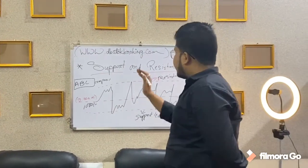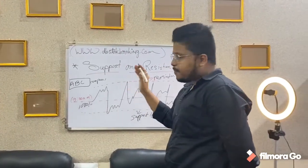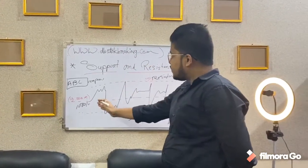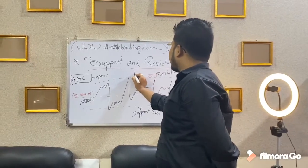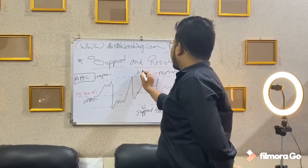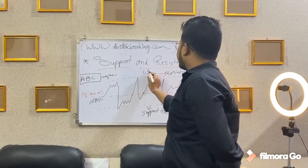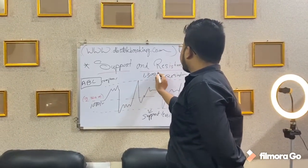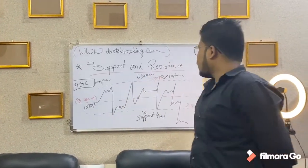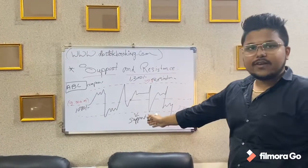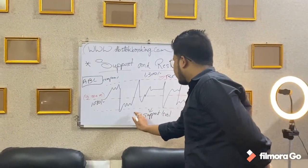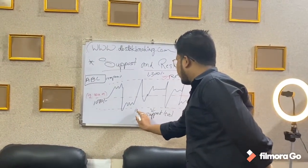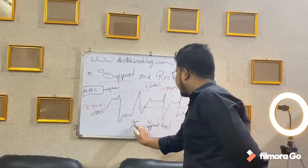The resistance of the particular A, B, C company is around, you can say, 1,300. And the support level is, you can say, 950.